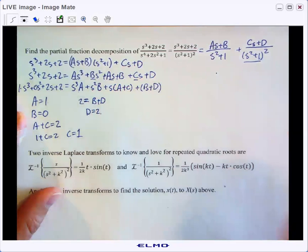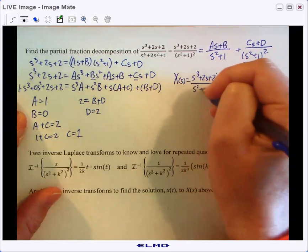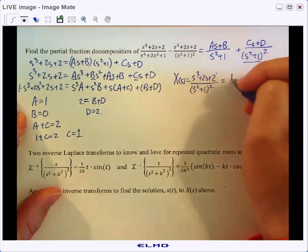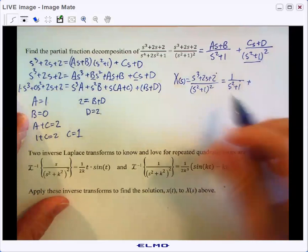So our partial fraction decomposition, capital X of S would be S cubed plus 2S plus 2 over S squared plus one quantity squared. And that would be worth A is one over S squared plus one.